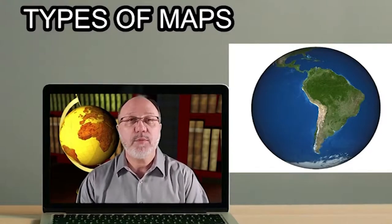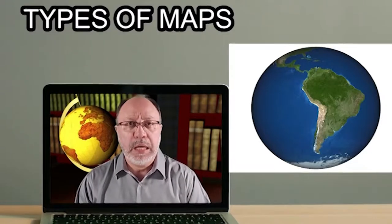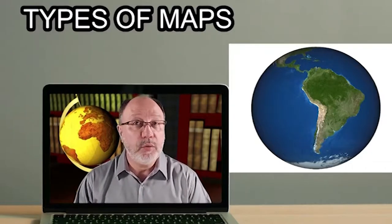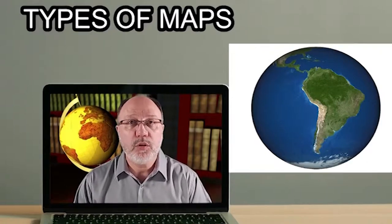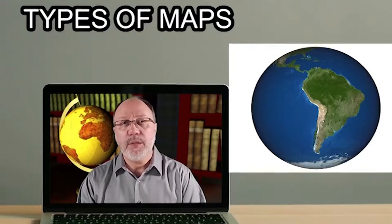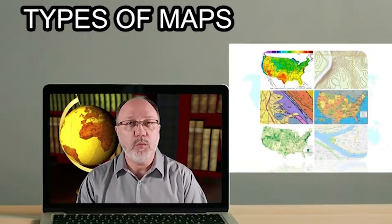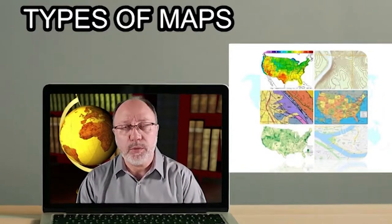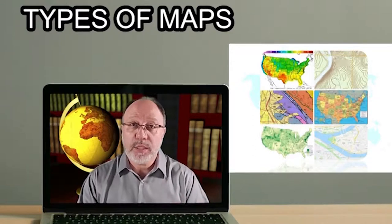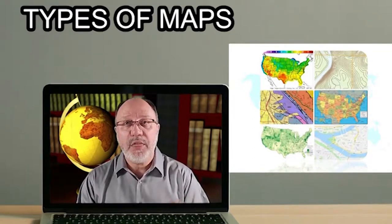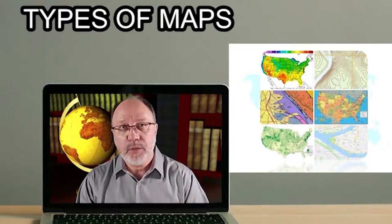Let's talk about types of maps. Millions of unique maps are used throughout the world, and most of those maps can be placed in one of two groups: reference maps and thematic maps.